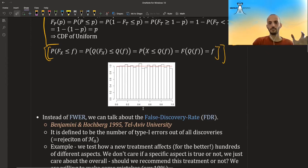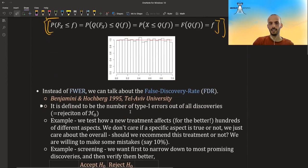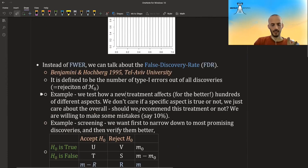And this new concept is called false discovery rate. And it was introduced by Benjamini and Hochberg in 1995. And they are from my university, the Tel Aviv University, but I don't know them. It is defined to be the number of type one errors out of all discoveries. So we will see this very soon.